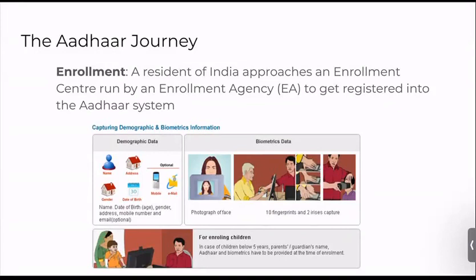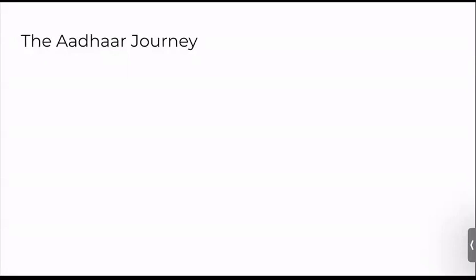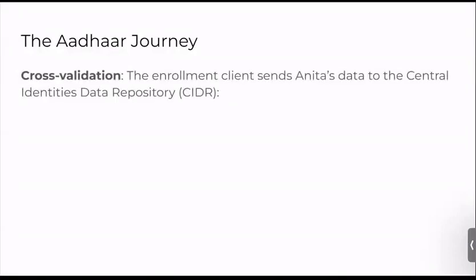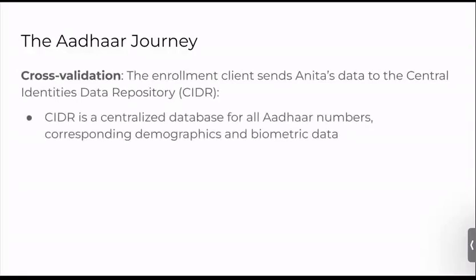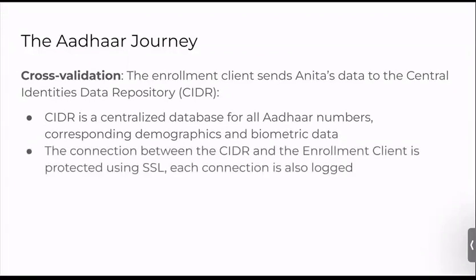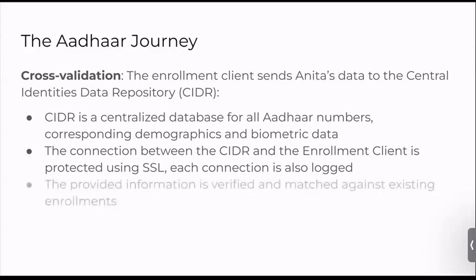Anita also carries original documents such as proof of identity and address, which are scanned and returned by the enrollment officer. The personal information is then encrypted and uploaded to a centralized database for deduplication, ensuring no individual is enrolled twice. Once complete, Anita receives a letter containing a randomly generated Aadhaar number. Behind the scenes, the enrollment client sends Anita's data to the Central Identities Data Repository (CIDR), a centralized database for all Aadhaar numbers with corresponding demographic and biometric data. The connection is protected using SSL and each connection is logged.